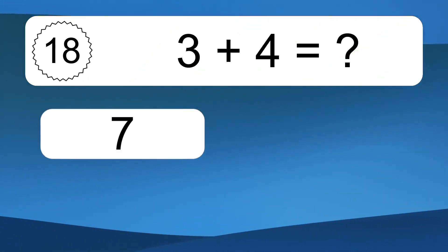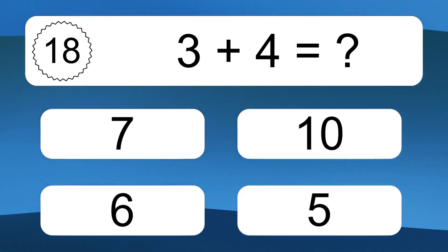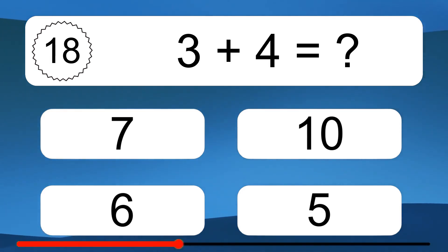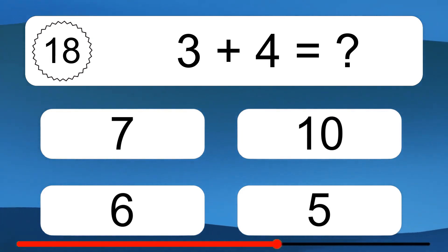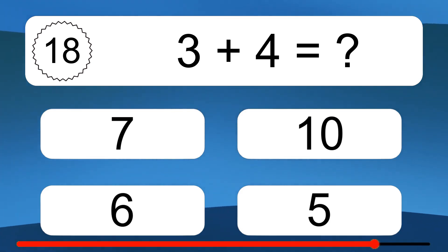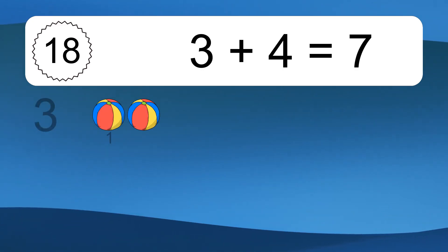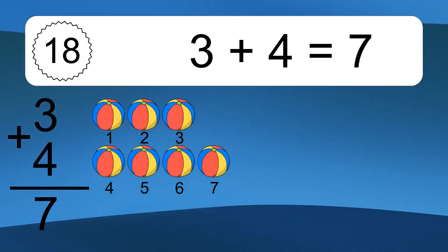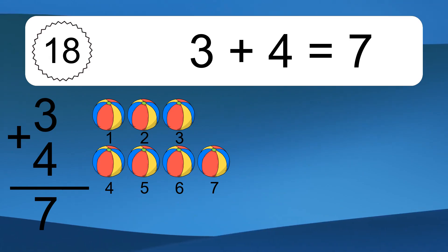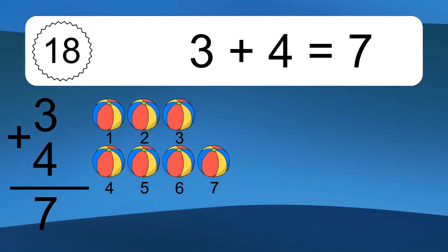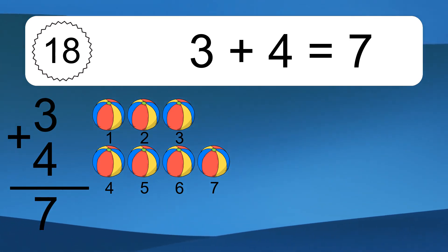3 plus 4 equals what? 3 plus 4 equals 7. Let's count it. 1, 2, 3, 4, 5, 6, 7.